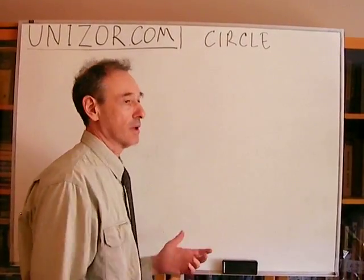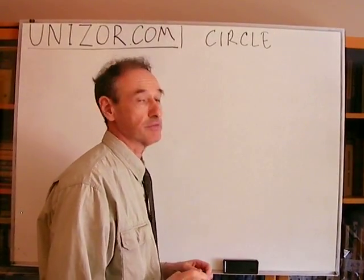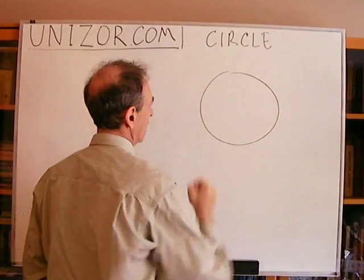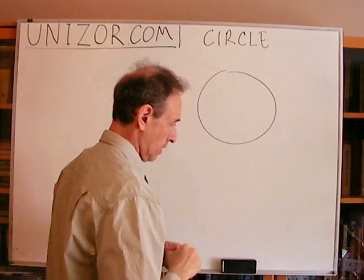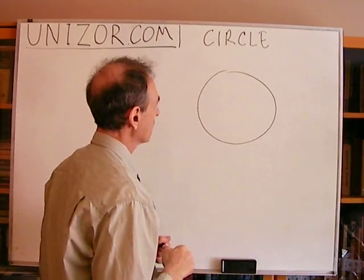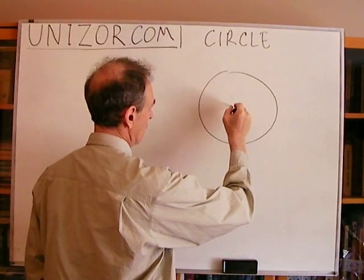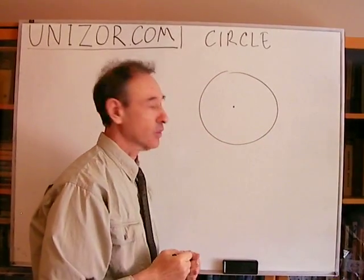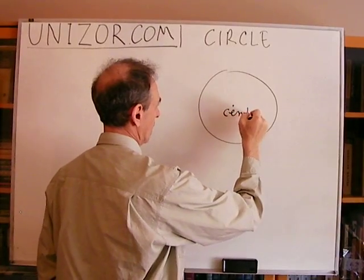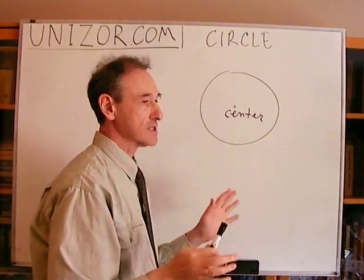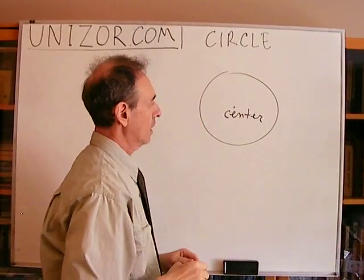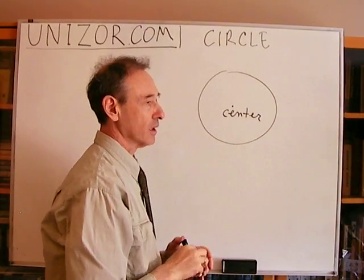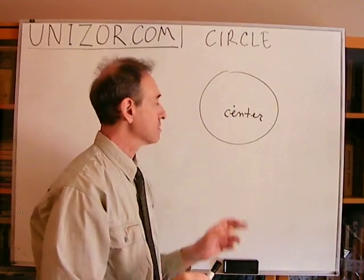Everybody knows more or less what a circle is, so we will just introduce a couple of definitions and some terminology. If you have a circle, you can describe it as a set of points on the plane which are located at the same distance from one fixed point, which is called the center. Everything on this particular curve are the points located at the same fixed distance from this center point.